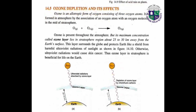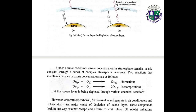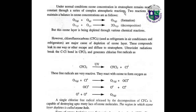What is ozone depletion and what are its effects? Ozone is an allotropic form of oxygen consisting of 3 oxygen atoms. It is formed in the atmosphere by the association of an oxygen atom with an oxygen molecule in the stratosphere. Ozone is present throughout the atmosphere, but its maximum concentration — called the ozone layer — lies in the stratosphere, about 25 to 30 km away from the earth's surface. This layer surrounds the globe and protects the earth like a shield from harmful ultraviolet radiations of sunlight. Under normal conditions, ozone concentration in the stratosphere remains nearly constant through a series of complex atmospheric reactions. These two reactions show the formation and decomposition of the ozone layer.